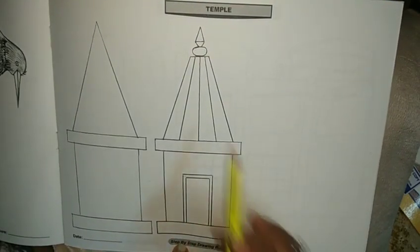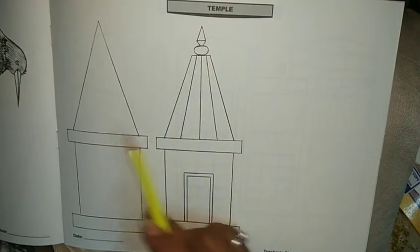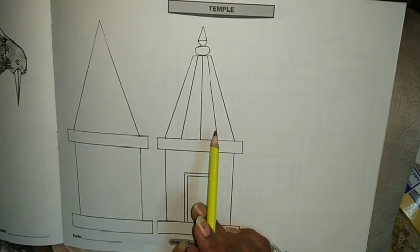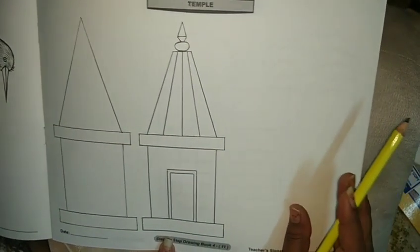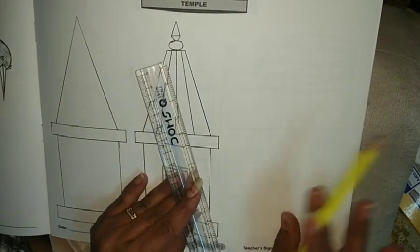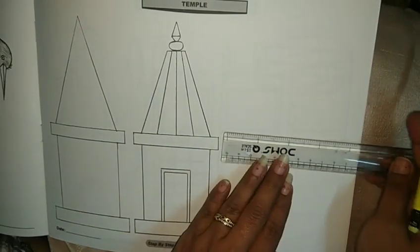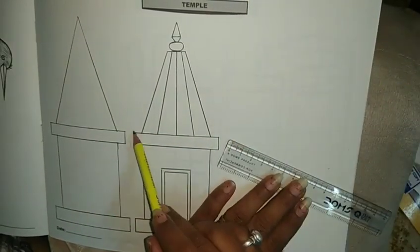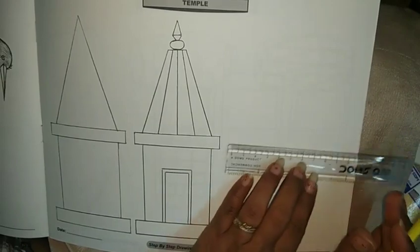We are going to draw a temple, so follow these steps. Let's start. First of all, we need a scale and pencil to draw the temple. Now first of all we'll draw the sleeping line.